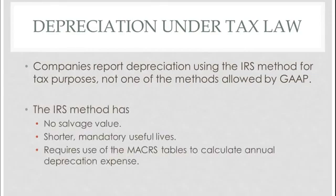First, there's no salvage value allowed. The useful lives are shorter, usually, and they're mandatory, and you have to use what they call the MACRS tables to calculate those annual depreciation expenses. So it's pretty limited in the way that you record this depreciation, and basically the reason was that the IRS didn't want people cheating when they did their taxes. Overall, this causes a real difference between our tax numbers and our GAAP numbers.